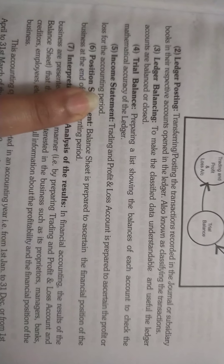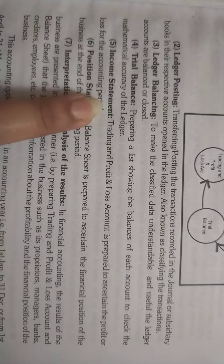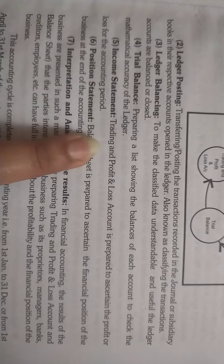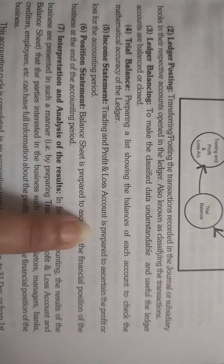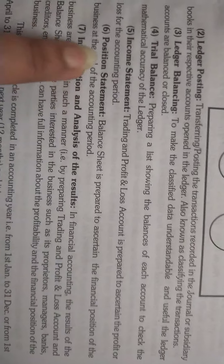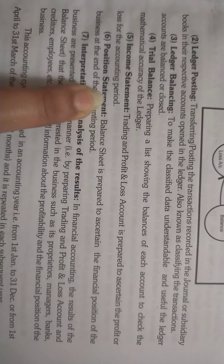Then we will see the income statement. The income statement is called the trading and profit and loss account. This shows the profit and loss of the accounting period.